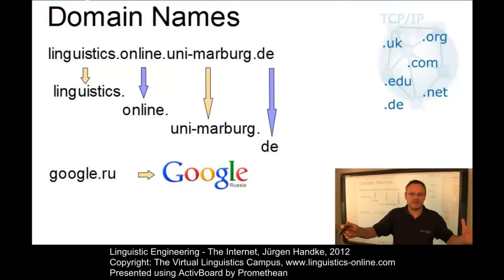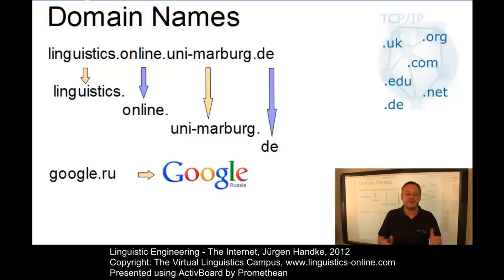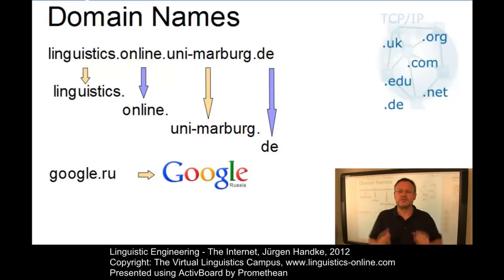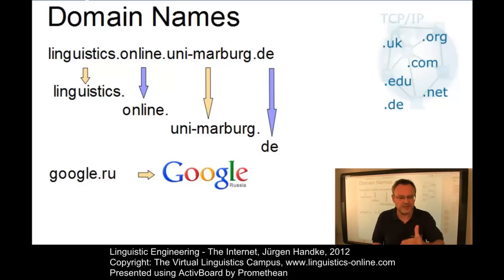When humans send messages to an Internet domain, the address has to be translated into an IP number. This mapping is done by specific software called a resolver. It sends a request to a set of machines called domain name servers, and these servers return a valid IP number to the resolver, allowing the source machine to create envelopes for the Internet Protocol.